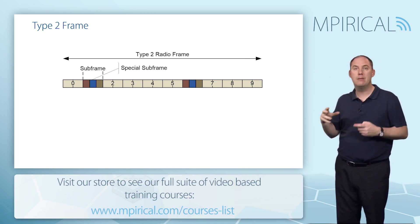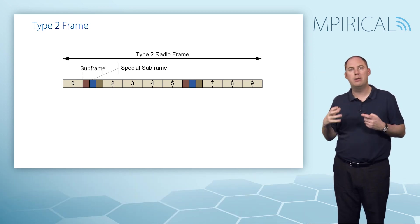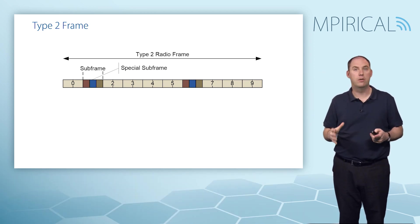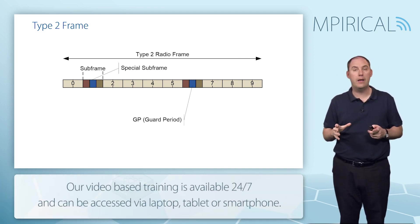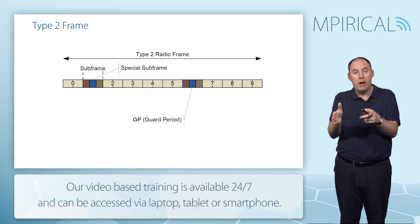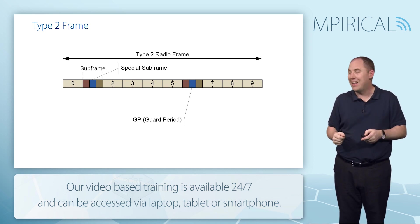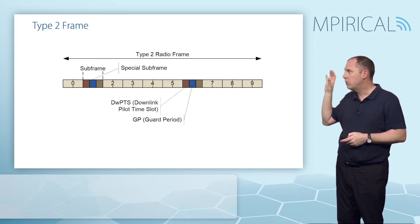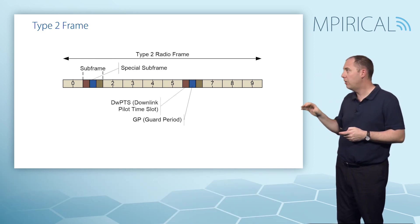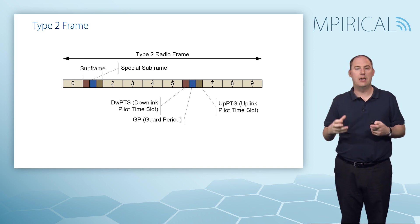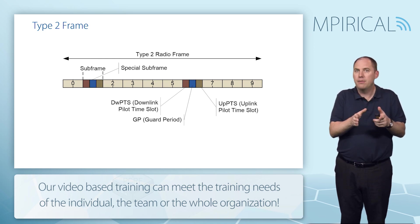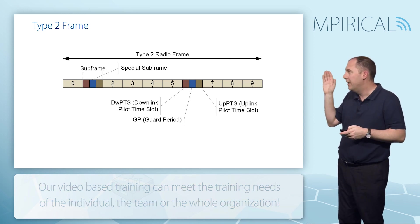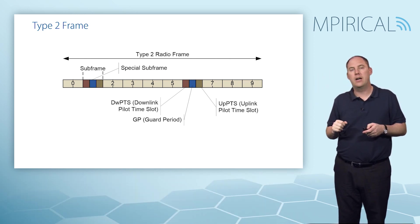The first subframe zero was a downlink, then we had a special frame. I want to talk about what's in these special subframes. In the special subframe, the first thing to spot is there's a guard period in blue. That's to provide an opportunity where no one's going to overlap. We also have a downlink pilot time slot and an uplink pilot time slot. We can't allocate the full subframe in the downlink or uplink, so we have a small period there, and that does carry information.